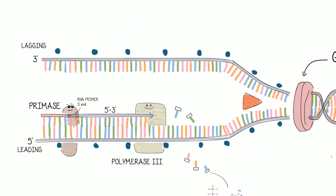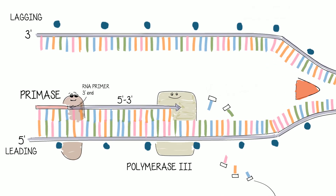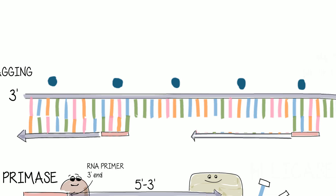However, the lagging strand, being a three-prime to five-prime strand, is another story — it complicates things. The polymerase cannot work in a continuous fashion because it runs in the opposite direction, and so it synthesizes the new strand in segments called Okazaki fragments. DNA primase plants primers at intervals, and at each primer, DNA polymerase synthesizes an Okazaki fragment, moving away from the replication fork, then detaches and repeats the process.